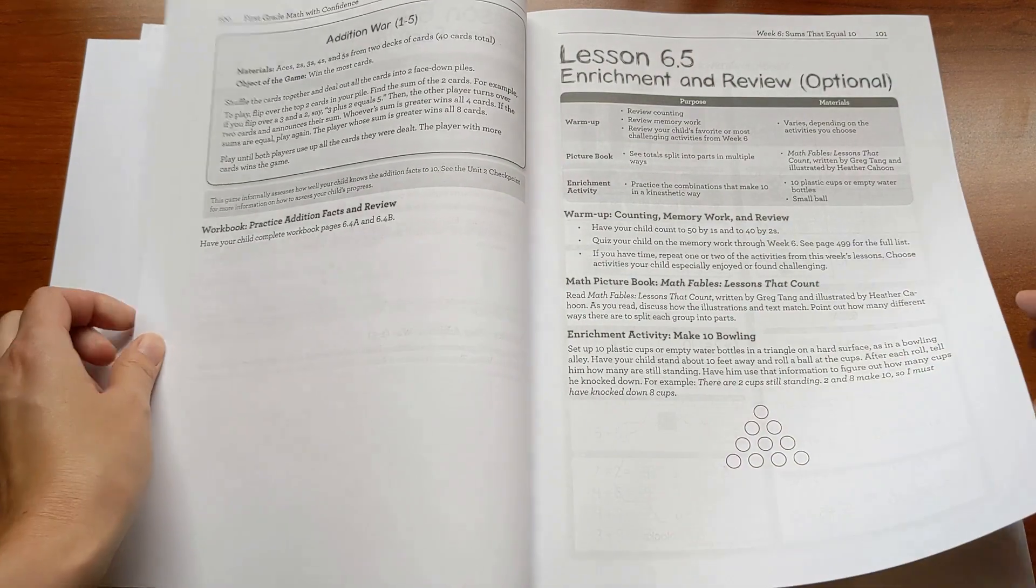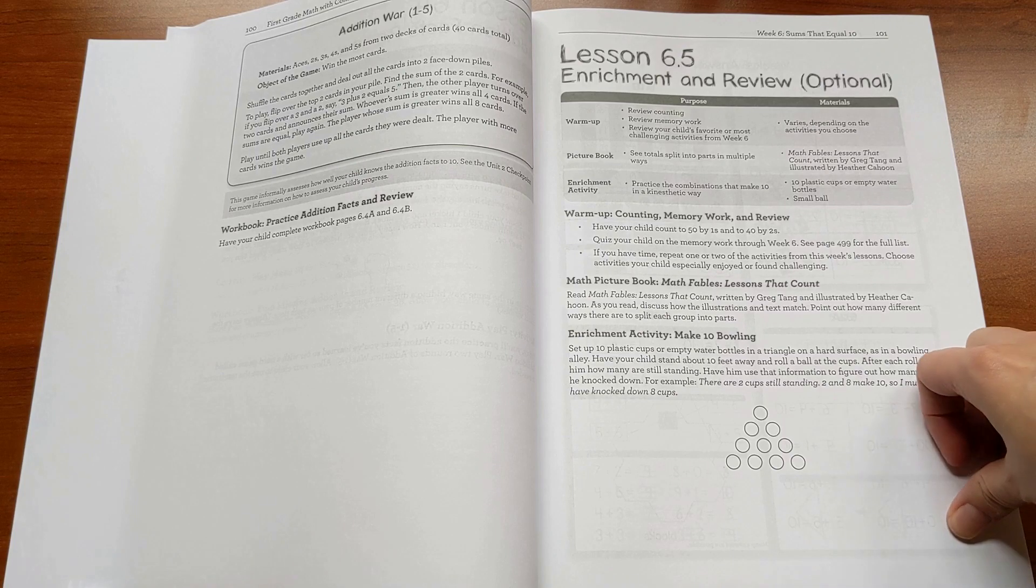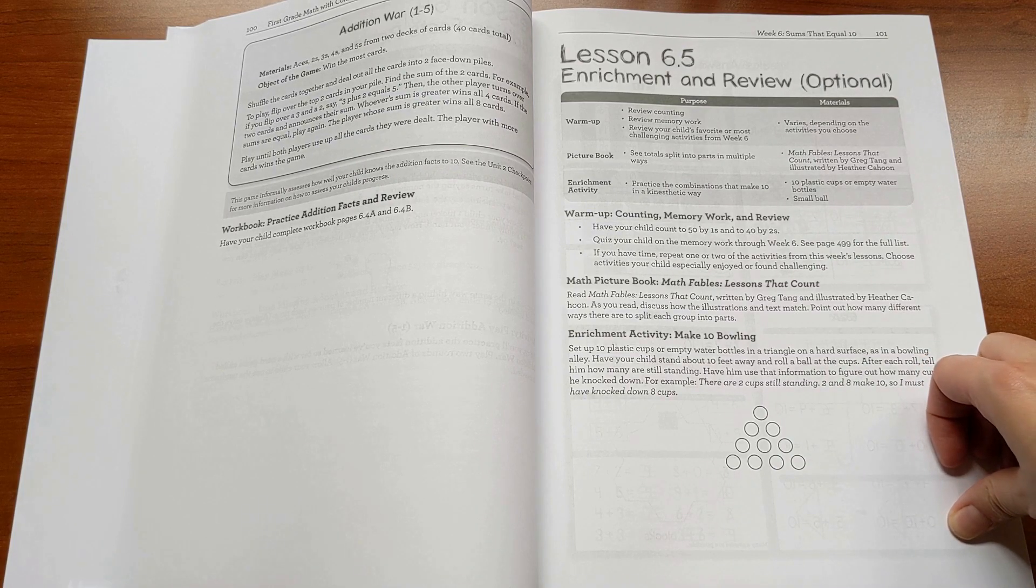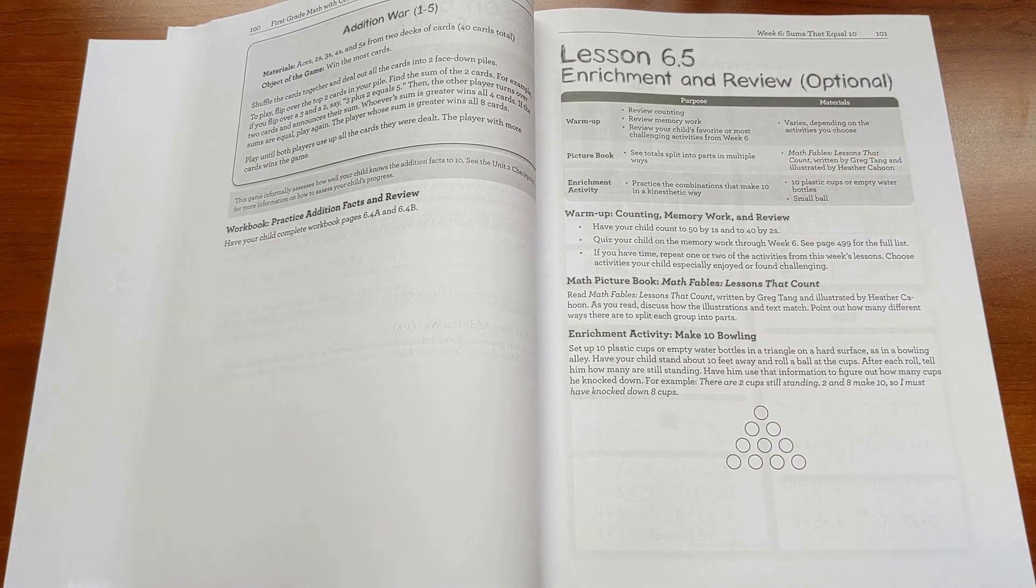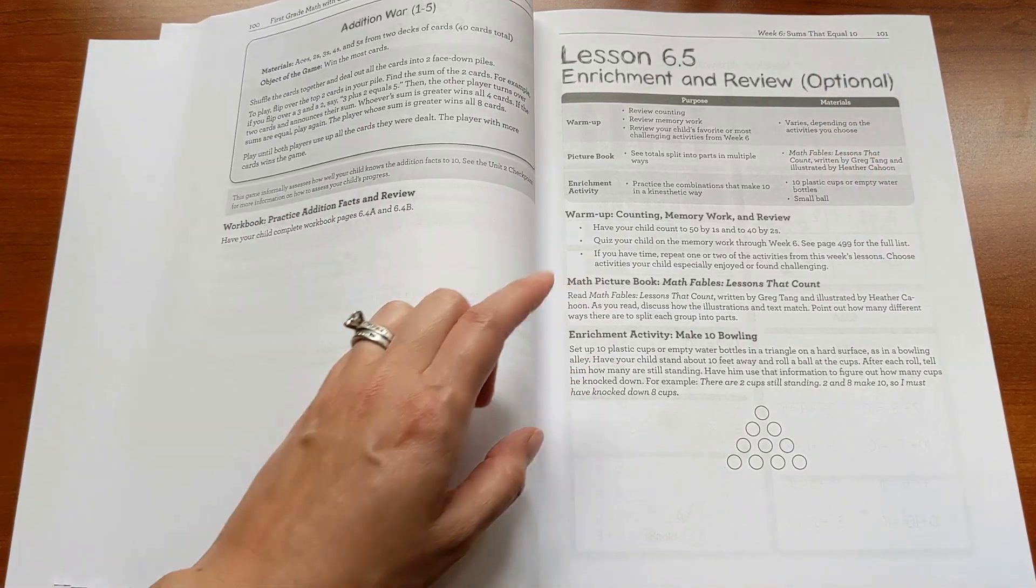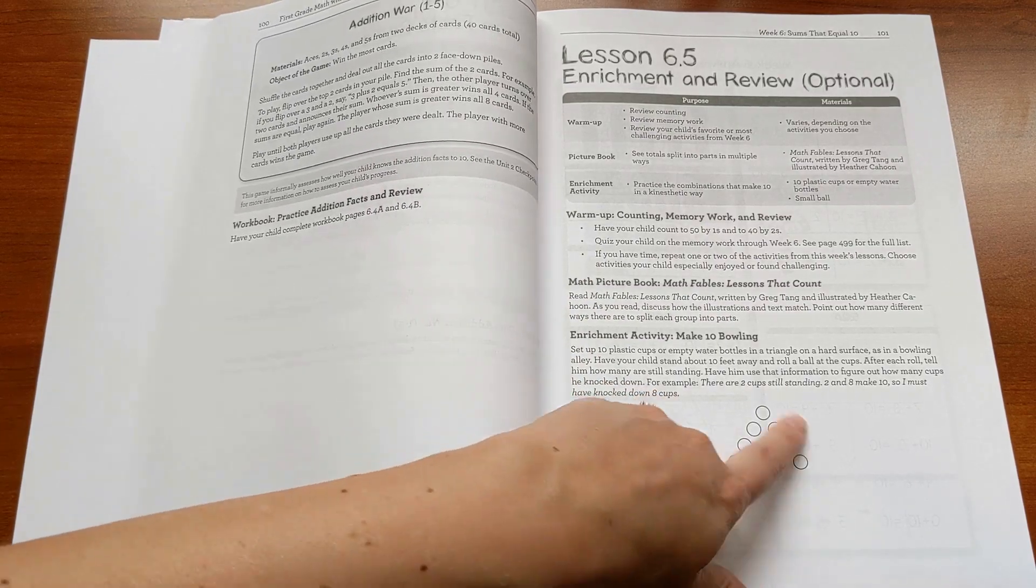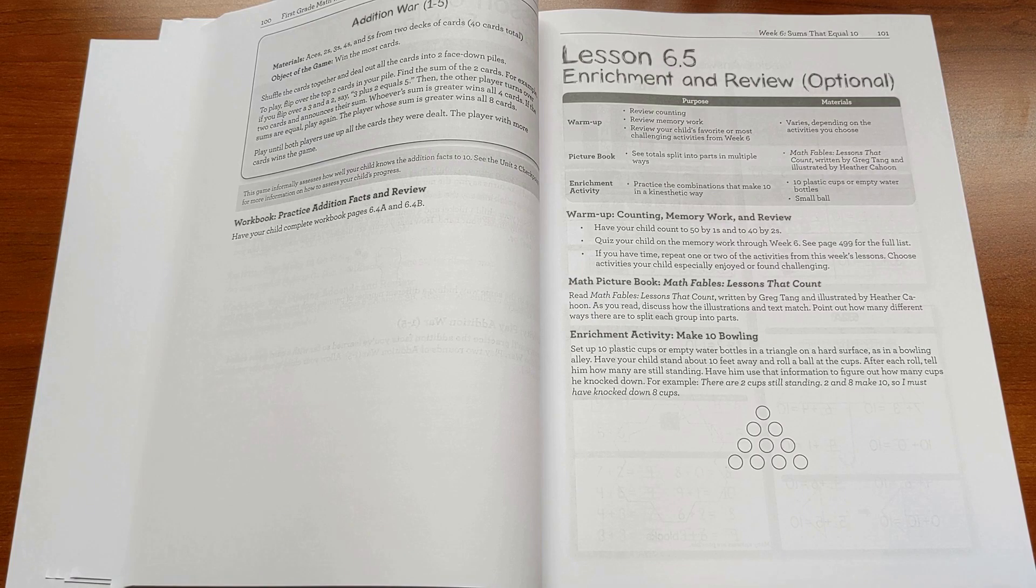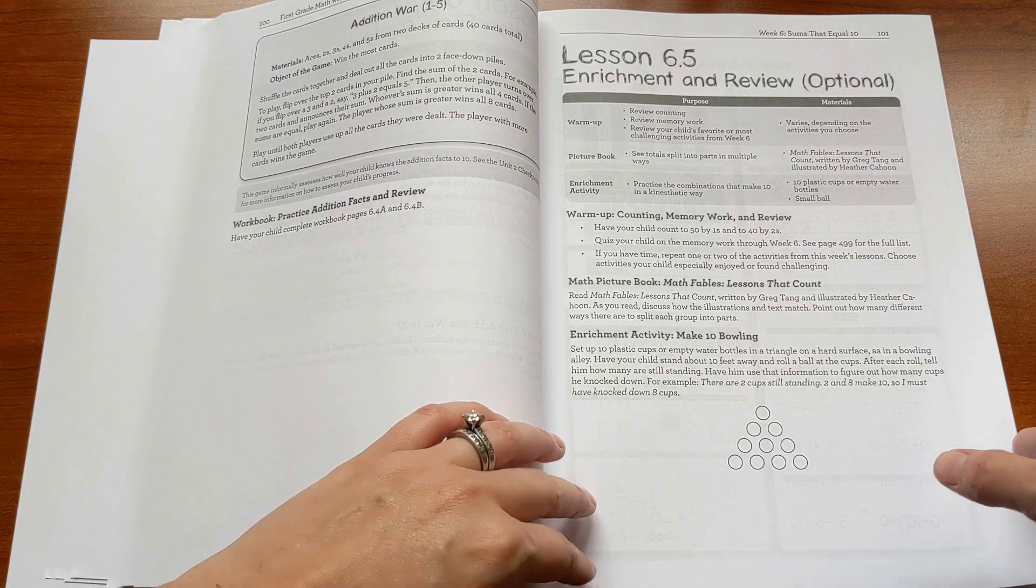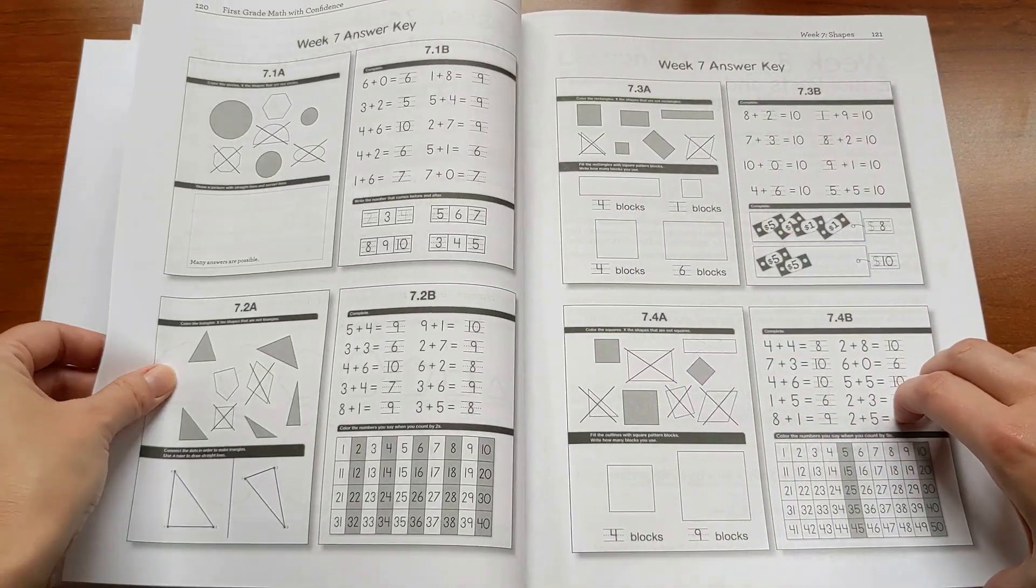Here's an enrichment lesson. Each week has four core lessons, and then there's an enrichment lesson at the end. This one is the end of a week of sums that equal 10. There's a math picture book that's suggested, and then the enrichment activity here is make 10 bowling - setting up 10 plastic cups like a bowling alley, knocking them down with a ball, and then saying how many are up and how many are down to practice those pairs that make 10. So there's a big variety here. Some of them are suggestions for little simple field trips. Some of them are art projects.